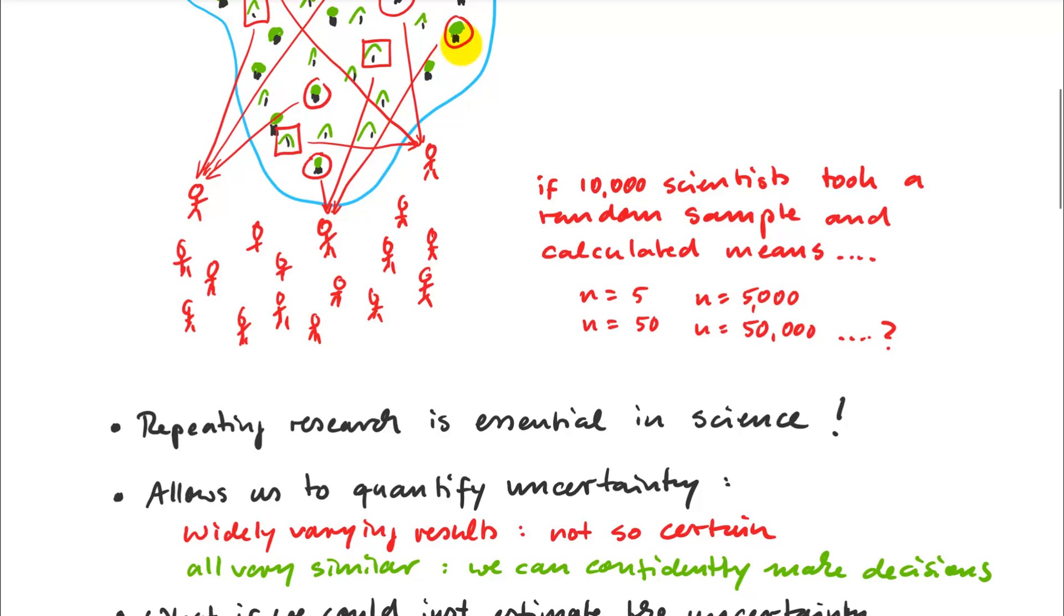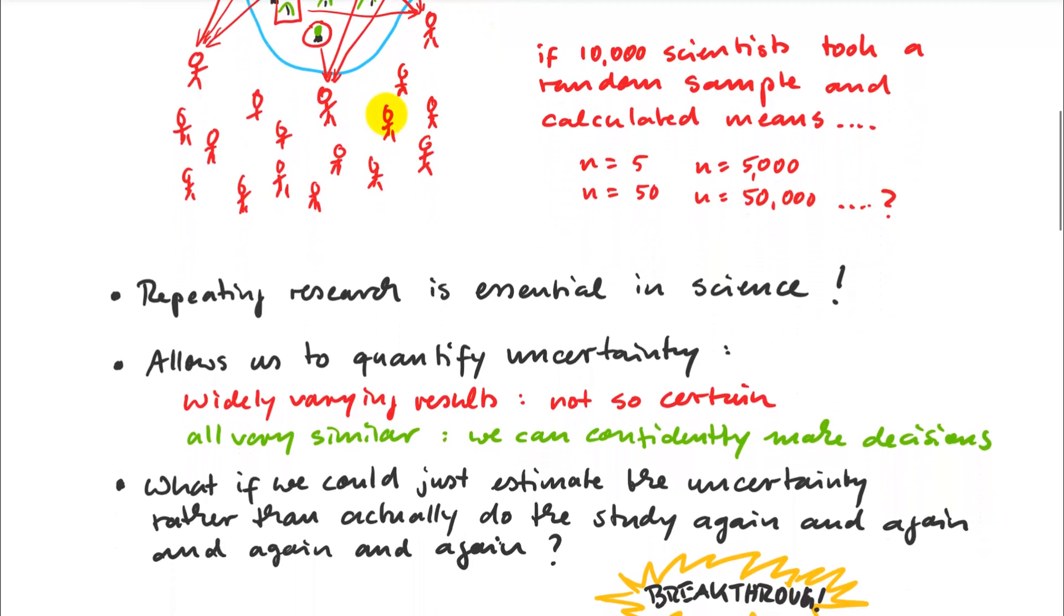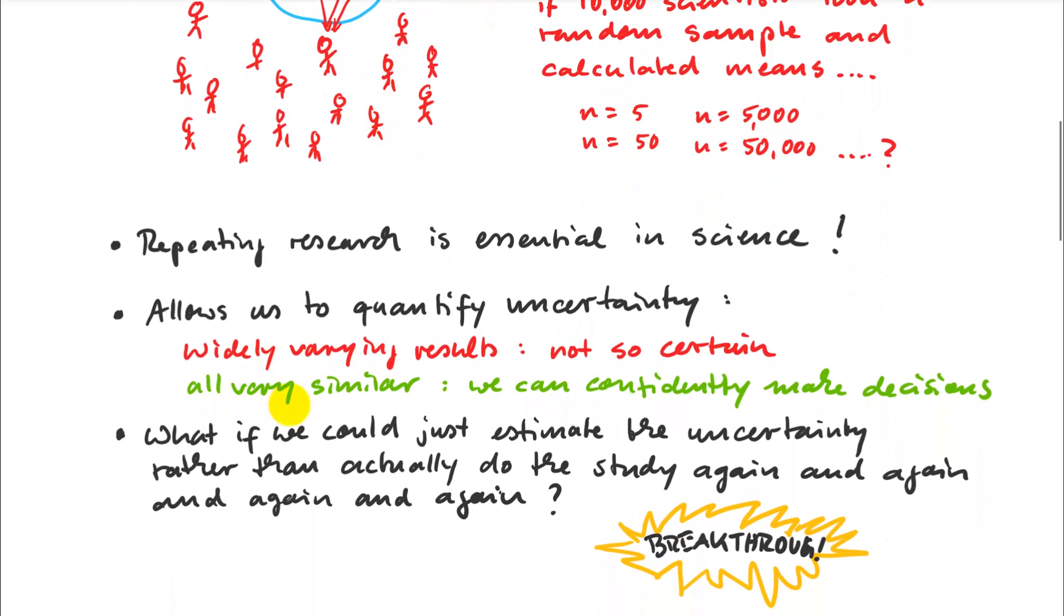For example, to select one species for reforestation rather than another for a commercial forestry operation. Now, what if we could just estimate the uncertainty rather than actually do the study again and again?